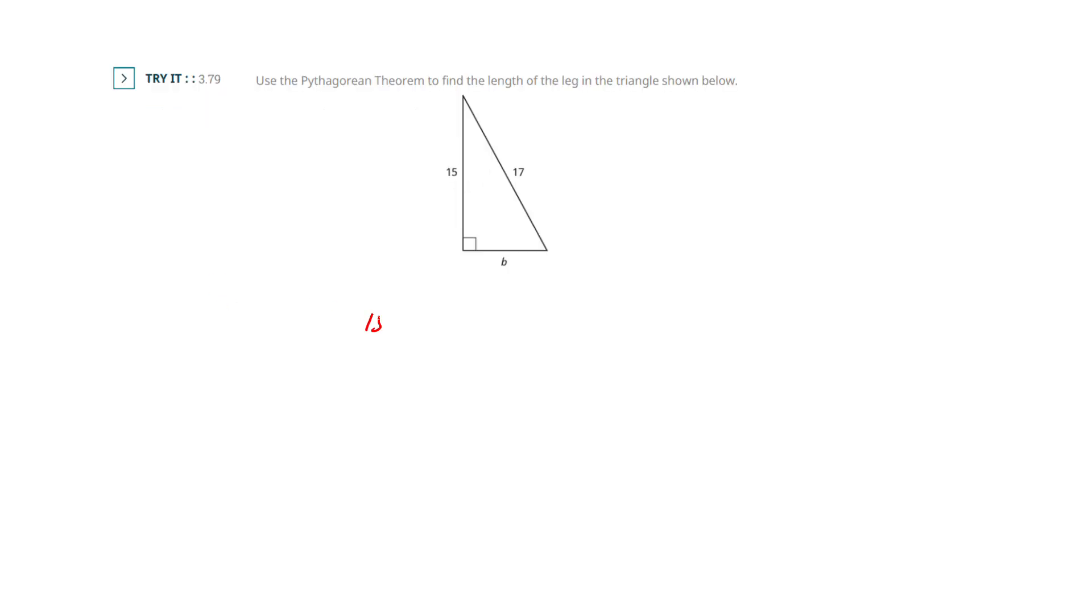Okay, so same thing here. I've got 15 squared plus B squared must equal 17 squared. So let's clean that up. I think 15 squared is 225 plus B squared. 17 squared is 289.